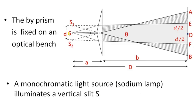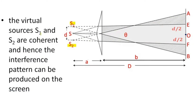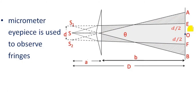The biprism is fixed on an optical bench, which is the basic arrangement for this experiment. A monochromatic source of light illuminates a vertical slit S; the virtual sources S1 and S2 are coherent, hence an interference pattern is produced on the screen from E to F, where superposition of refracted waves occurs in the unshaded region. A micrometer eyepiece can be placed to observe the fringes.